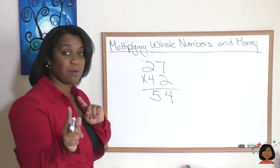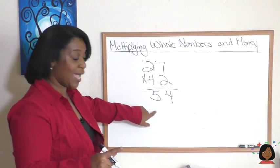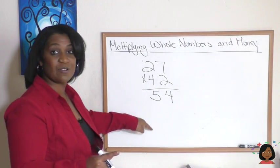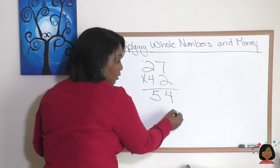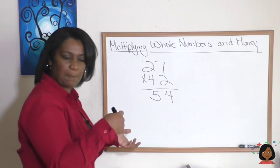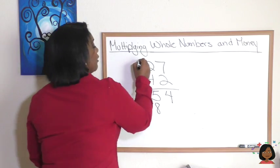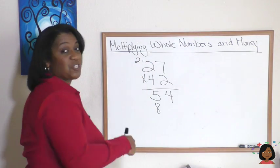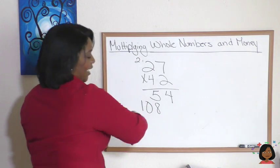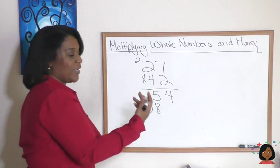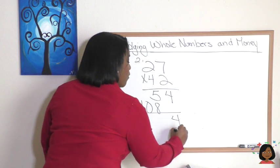We're not done. We have to now do 27 times 4. Some of you were taught to put a 0 here as a placeholder, but the important part is that when we do 27 times 4, we're going to line up our answer right underneath the 4. 7 times 4 is 28, I carry that 2. 4 times 2 is 8 plus 2 is 10. Now I can add these two numbers together: 4, 8, and 5 is 13. There we go, 1,134 is our product.